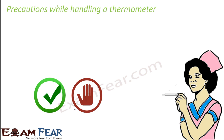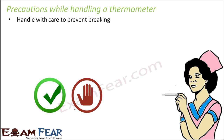There are certain precautions to take while handling a clinical thermometer. First, to measure temperature, place the thermometer on a person's body, preferably under the tongue or under the arms, and keep it there for approximately one minute. The bulb gets heated by the body, mercury expands and rises, then you remove it and read the thermometer. The thermometer must be handled with care to prevent breaking, because it contains mercury, which is a very harmful and poisonous substance.